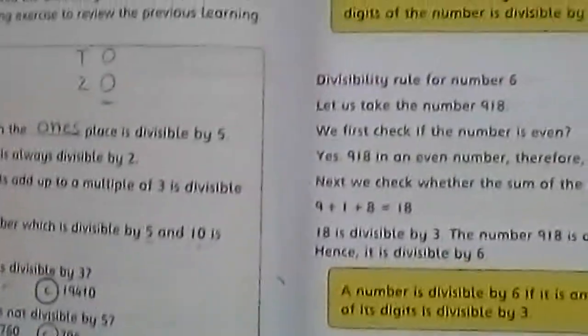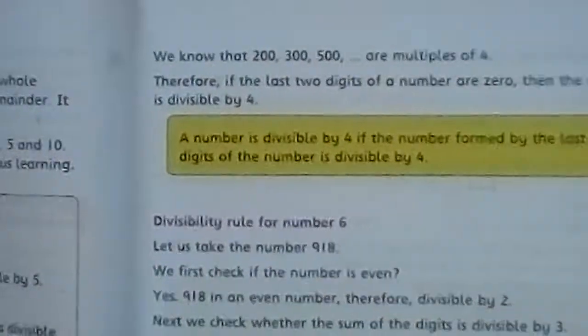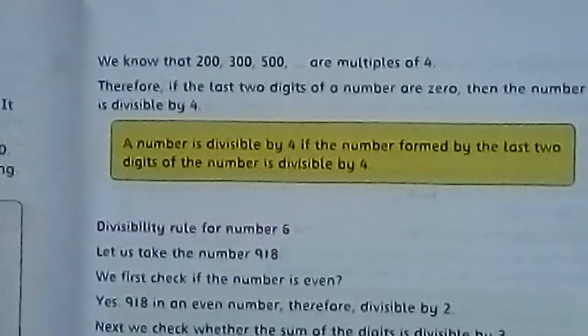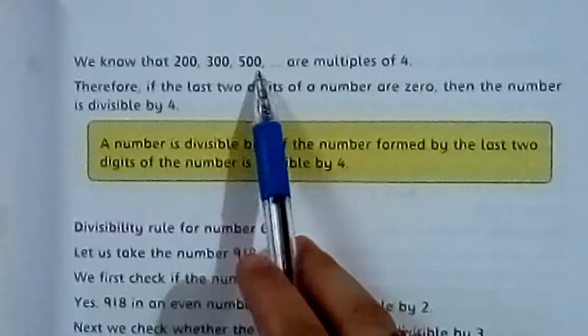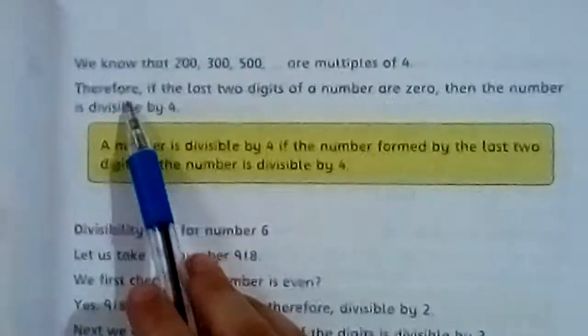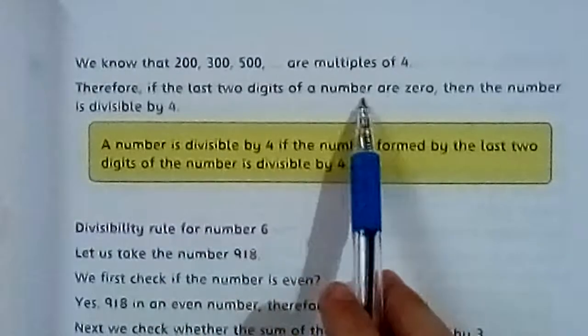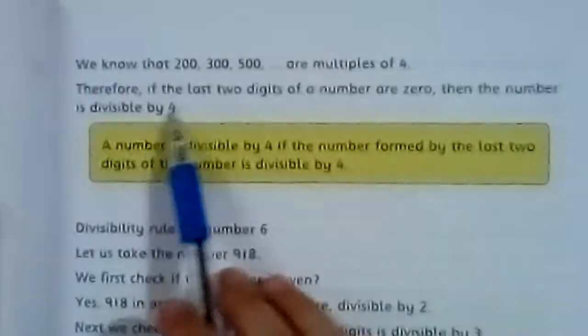Now, come to the next page number 25. We know that 200, 300, 500 are multiples of 4. Therefore, if the last two digits of a number are 0, then the number is divisible by 4.